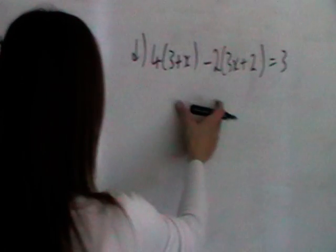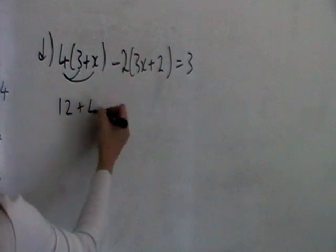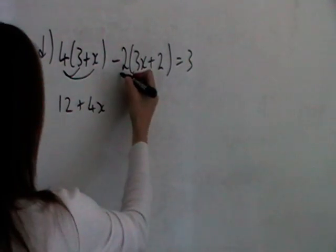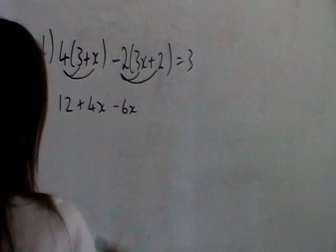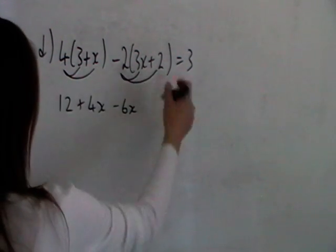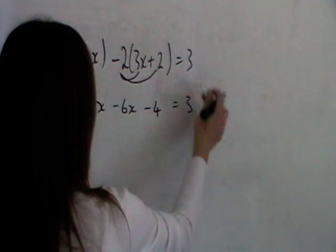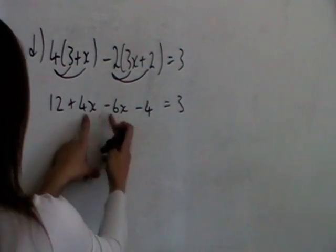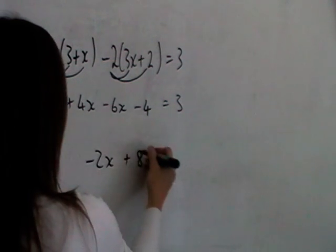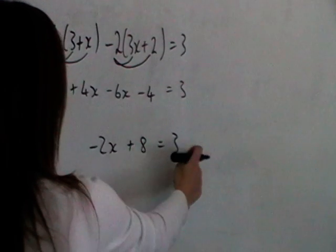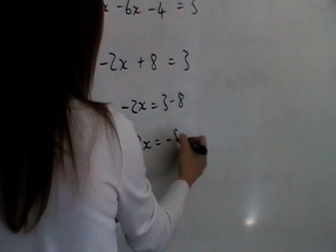Moving on to Part D — same thing again, multiplying the brackets out. So we get 12 plus 4x. Then here, you've got the minus 2 multiplying by the 3x, which gives you minus 6x. Be careful at this stage, because you have a minus 2 multiplying by the 2, so that will also be negative — that will be minus 4, equal to 3. Collecting our terms: 4x minus 6x is minus 2x, and 12 minus 4 is plus 8, equal to 3. If we take the 8 over, we get minus 2x is minus 5.